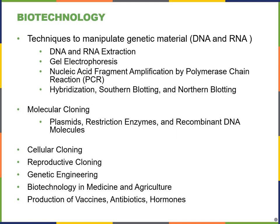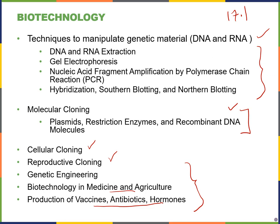This slide shows us an outline of the first section of chapter 17, section 17.1. I'm going to go through different techniques to manipulate genetic material, including cloning — first starting with molecular cloning, then looking briefly at cellular cloning and reproductive cloning — and different types of genetic engineering and how we use biotechnology in medicine and agriculture, including producing vaccines, antibiotics, and different hormones.